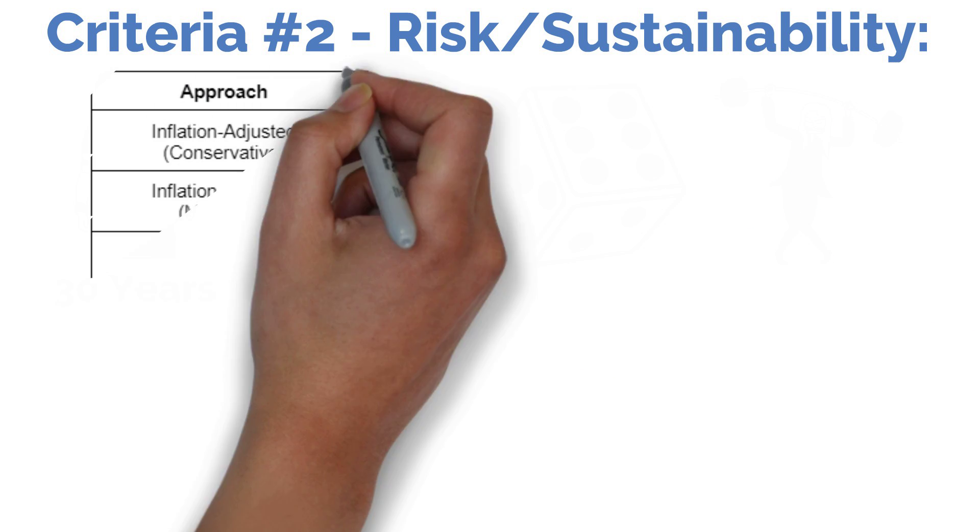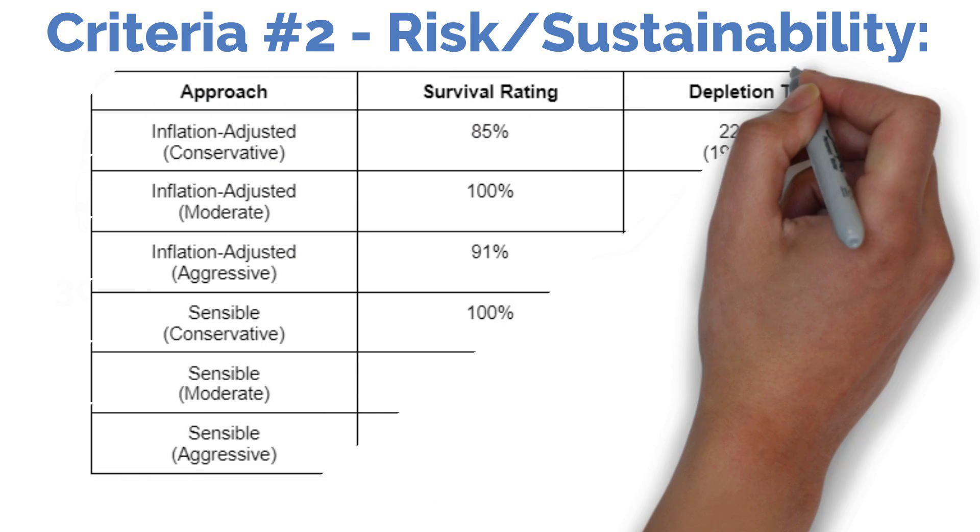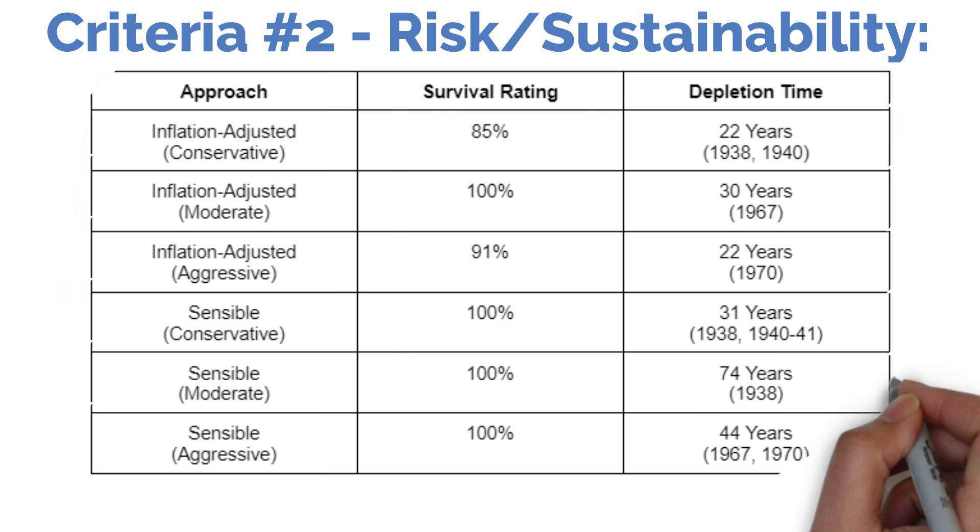Starting with the survival rating, we can see that the sensible approach shines relative to the traditional 4% rule, never once outliving its savings over a 30-year time period. This is not entirely surprising given that it's using a lower safe withdrawal rate of 3%, but it's good to know that even with the more explosive growth strategies, our 10% cut of the gains were not enough to get us into trouble even when those gains were followed up by terrible bear markets. In terms of the worst-case scenario, the sensible approach absolutely dominates the 4% rule, lasting a minimum of 31, 74, and 44 years using the conservative, moderate, and aggressive allocation respectively.